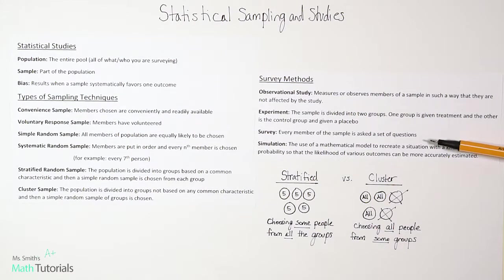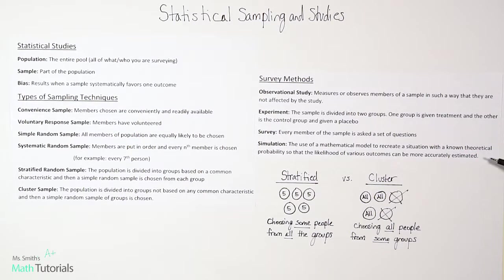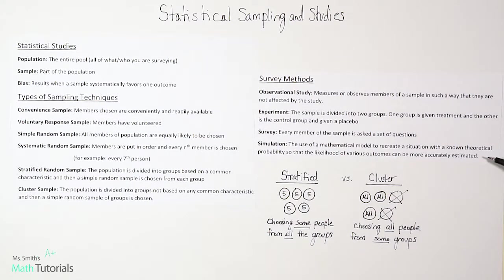A survey is when every member of the sample is asked a set of questions — that one's pretty straightforward. A simulation is the use of a mathematical model to recreate a situation with a known theoretical probability so that the likelihood of various outcomes can be more accurately estimated.